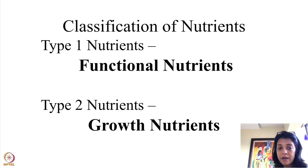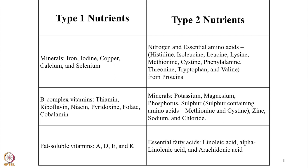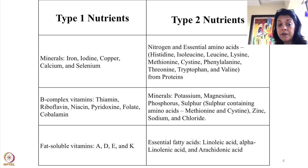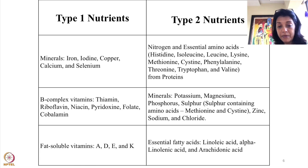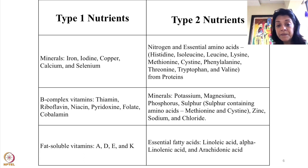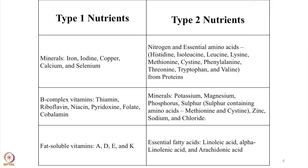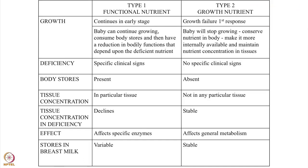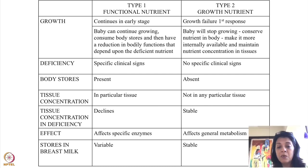Type 1 nutrients are functional nutrients: iron, iodine, copper, calcium, selenium, all your vitamins — fat-soluble vitamins, B complex, and water-soluble vitamins. Type 2 nutrients are growth nutrients: essential amino acids, essential fatty acids, and minerals — potassium, magnesium, phosphorus, sulphur, zinc, sodium, chloride. I have already discussed this, so I won't go into too much detail.